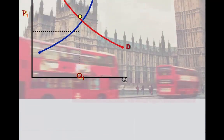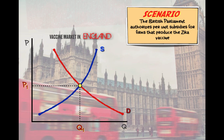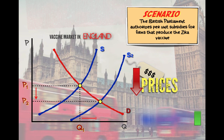Let's do one more. Here is a graph for the vaccine market in England. Suppose the British Parliament authorizes per-unit subsidies for firms that produce the Zika vaccine in order to prevent it from coming to Great Britain. Subsidies are when the government pays a firm to produce more of a good that they see as beneficial to society — essentially a grant in the production process. In order to get those subsidies, firms are going to have to increase the supply of vaccines in the British market, causing the price of vaccines to fall and making them more affordable, while increasing the quantity available to the public.